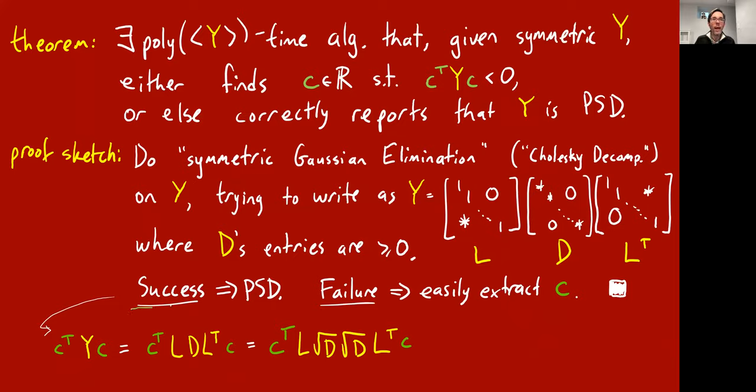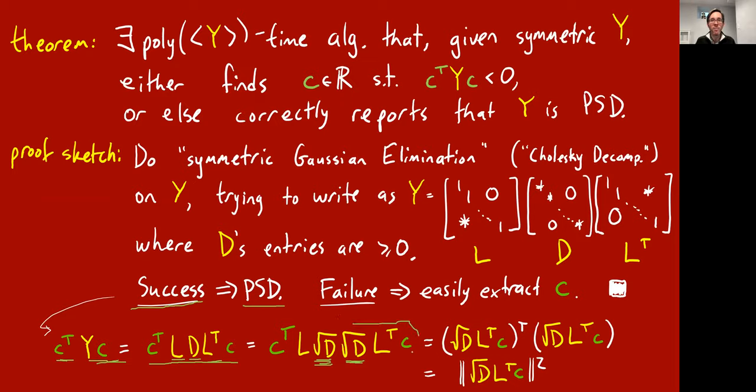So just real briefly, why, if you succeed, does this imply that the matrix y is positive semidefinite? Well, let me just put everything out there. It's because if y is really expressible as L, D, L transpose, then for any vector C, if you look at C transpose Y C, it's C transpose L, D, L transpose C. If also the diagonal entries are non-negative, then they have square roots. So you can write D as square root D times square root D, which is the diagonal matrix with the square root of the diagonal entries on the diagonal entries. And so now you can write this. See now this part here is the transpose of this part here. And so this C transpose Y C is equal to this vector times its transpose, which means it's equal to the squared length of the vector, which is always non-negative. So this proves that if y really can be written like L, D, L transpose, where the diagonal entries are non-negative, then it is PSD.